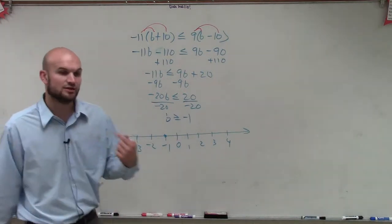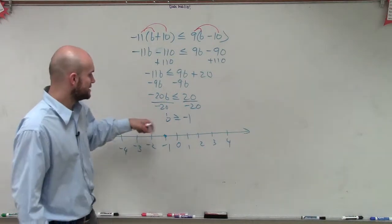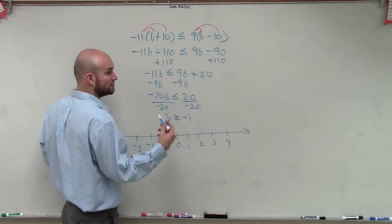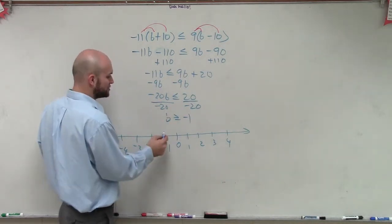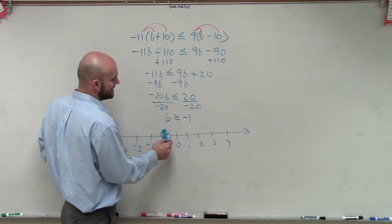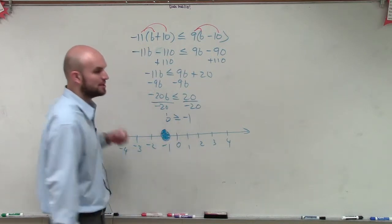Now, I don't know if it's going to be true or not. But since I know that b is greater than or equal to negative 1, I know that it has to be true at negative 1 because it's equal to. So whenever you have that equal sign, we know that it's going to be a part of our solution.